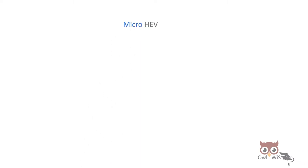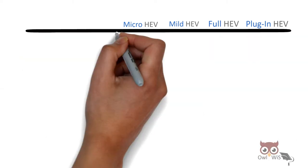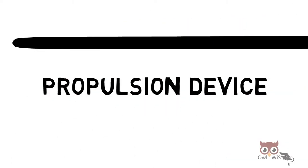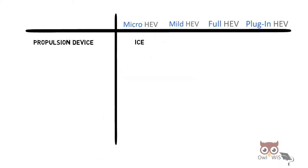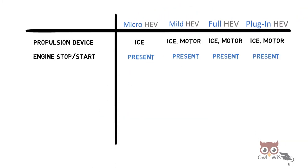Let us see which functionalities is present in which type of HEV. Let's start with propulsion device. In micro it is IC. In remaining all it is IC and motor. Next is engine stop-start feature. It is present in all of them.